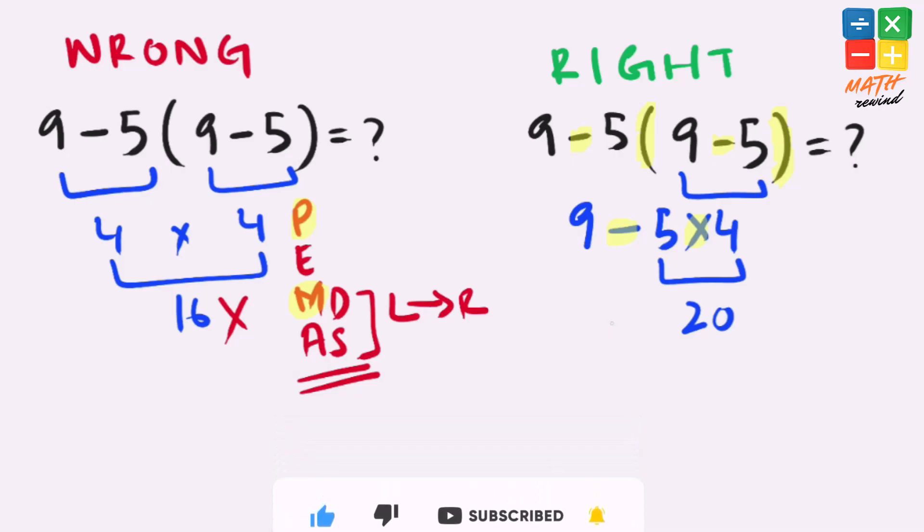9 minus 20 gives us minus 11, which is the final and correct answer to this problem.